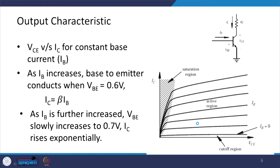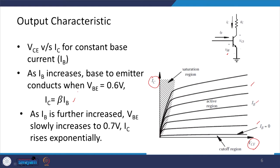For the output characteristic, we plot VCE versus IC for constant base current values. As IB increases, the base-emitter junction conducts when VBE is around 0.6 volts, and IC equals beta times IB, which is the collector current amplification.